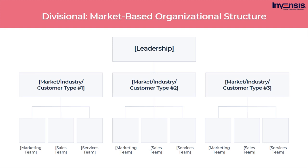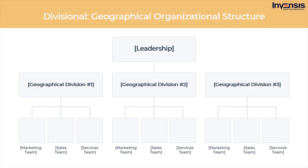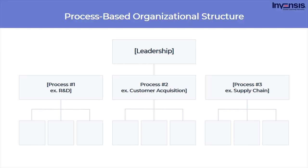Another variety of the divisional organizational structure is the market-based structure, wherein the divisions of an organization are based around markets, industries, or customer types. The geographical organizational structure establishes its divisions based on geography. More specifically, the divisions of a geographical structure can include territories, regions, or districts. Process-based organizational structures are designed around the end-to-end flow of different processes, such as research and development, customer acquisition, and order fulfillment. Unlike a strictly functional structure, a process-based structure considers not only the activities employees perform, but also how those different activities interact with one another.